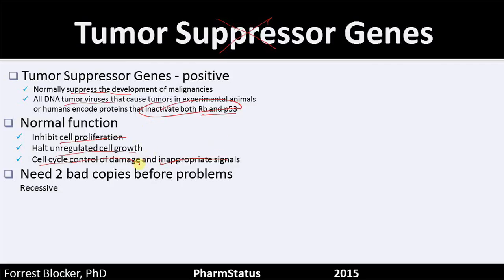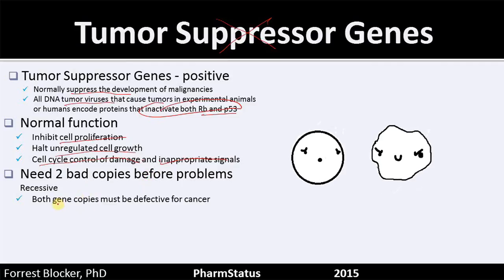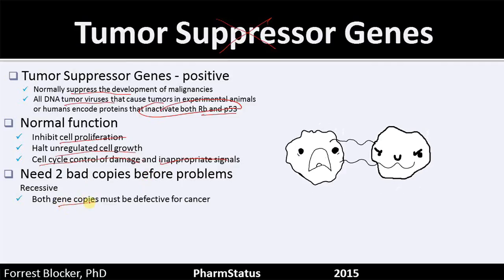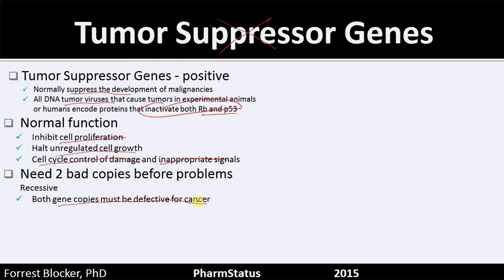If you have one good copy of a tumor suppressor gene — remember all your chromosomes, you have two copies — if you have one good copy, that's all you need. It's a recessive trait. So both gene copies must be defective for cancer. If you're born with one bad and one good, then over time you may get a defective second one, so your backup may go.